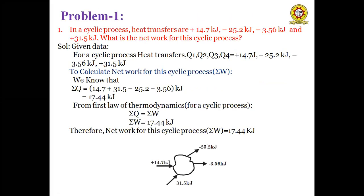In the first problem, in a cyclic process, heat transfers are plus 14.7 kJ, minus 25.2 kJ, minus 3.56 kJ, and plus 31.5 kJ. What is the net work for the cyclic process? This system is in a cyclic process with four heat transfers.